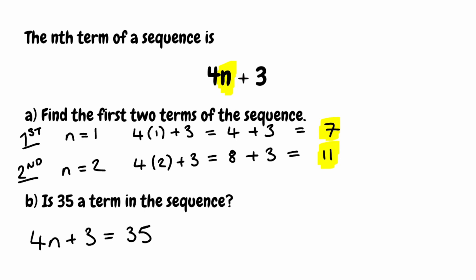So if we solve this equation and we get an integer for n, we know that 35 is actually in the sequence. However, if it turns out not to be an integer, we know then it isn't in the sequence.